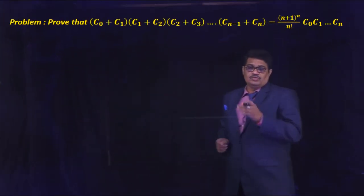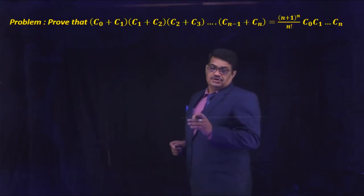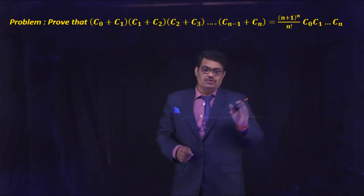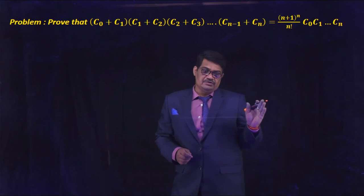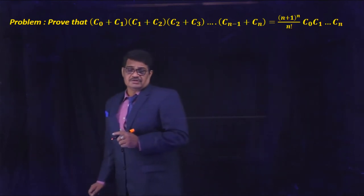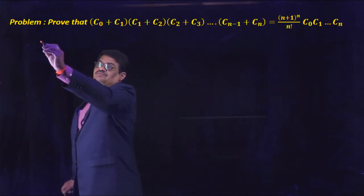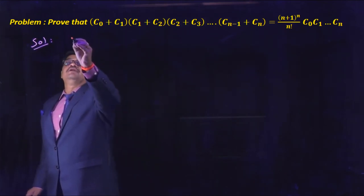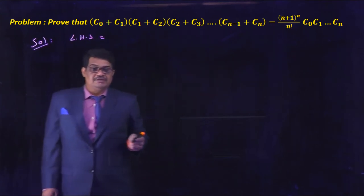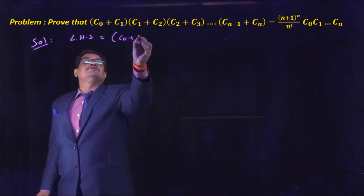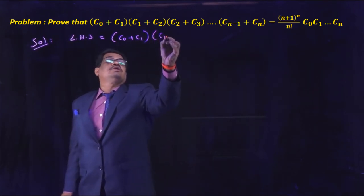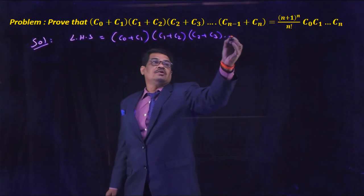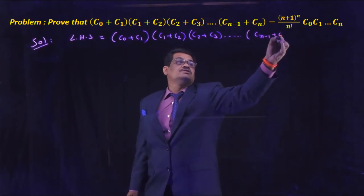See the next problem. Prove that (C0+C1)(C1+C2)(C2+C3)···(C(n-1)+Cn) = [(n+1)^n / n!] × C0·C1·C2···Cn.